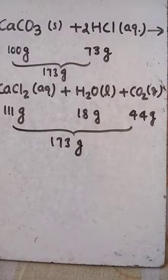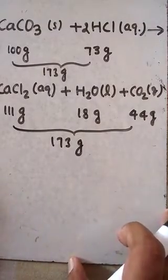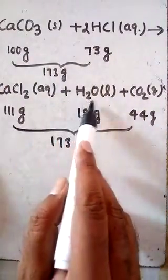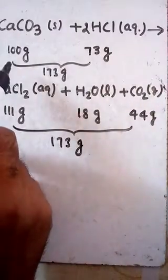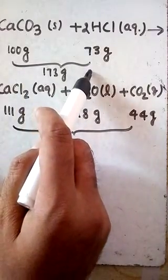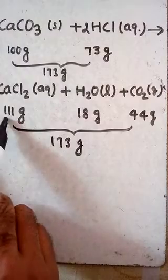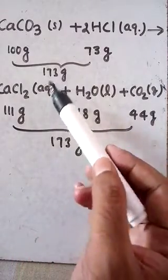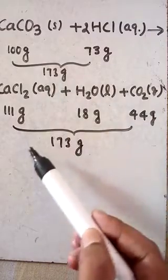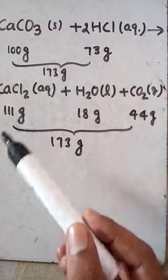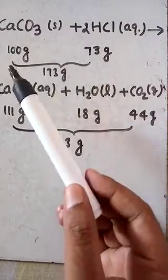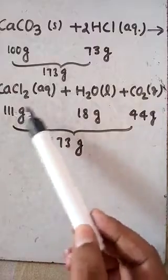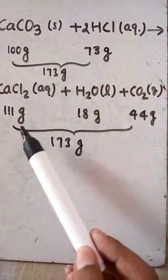In this example, CaCO3 reacts with HCl to form CaCl2, H2O, and CO2. In this reaction, 100 g of calcium carbonate reacts with 73 g of HCl to produce 111 g of calcium chloride, 18 g of water, and 44 g of CO2. The total mass on the reactant side is 173 g, and on the product side is also 173 g. This equation gives us knowledge about calcium carbonate, HCl, CaCl2, H2O, and CO2 — all the compounds taking part in or formed during the chemical reaction.